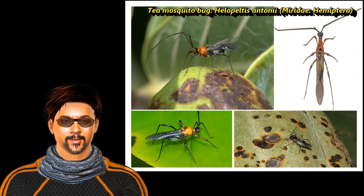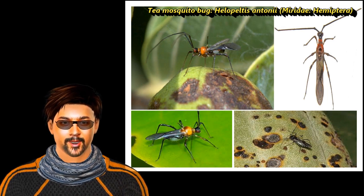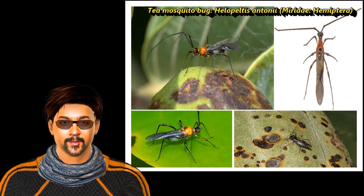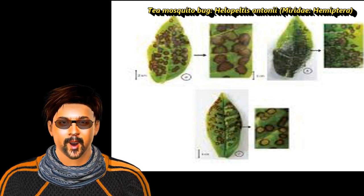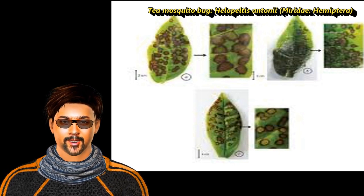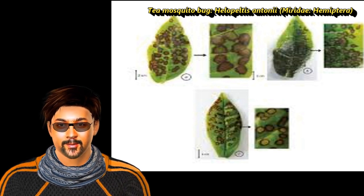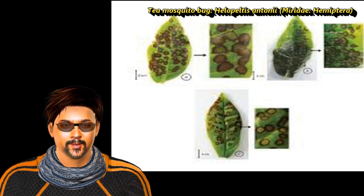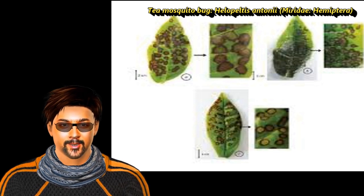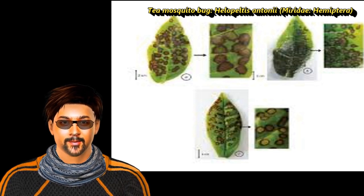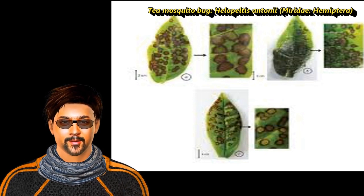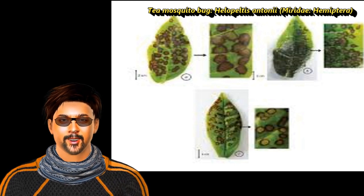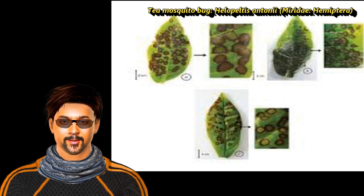Both adults and nymphs feed on tender shoots and leaf veins, causing necrotic lesions and forming patches on leaves. Brownish-black necrotic patches appear with resin exuded from feeding punctures. These black punctures or black necrotic patches are the peculiar symptoms of the tea mosquito bug, as you can see in the picture.